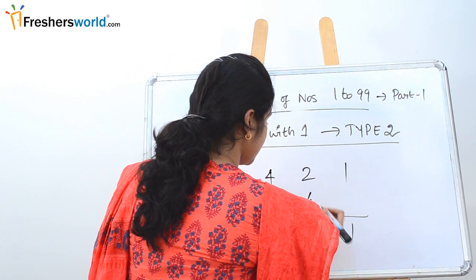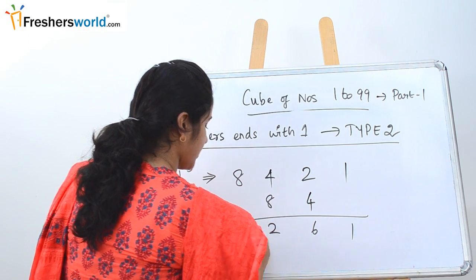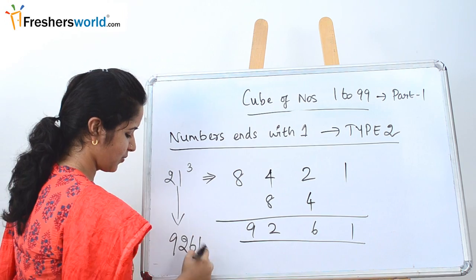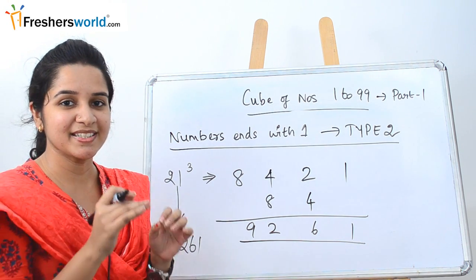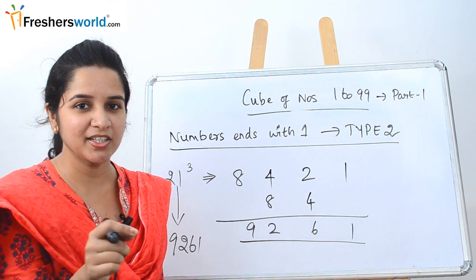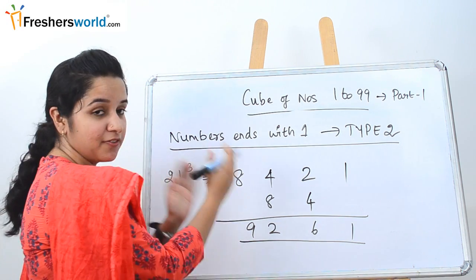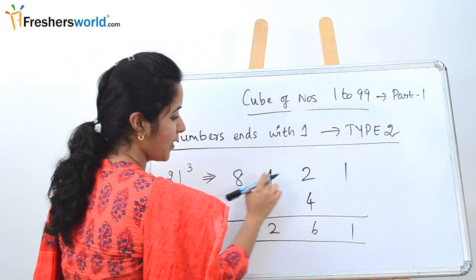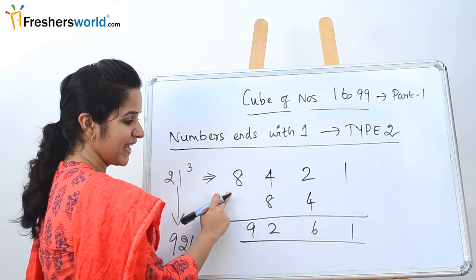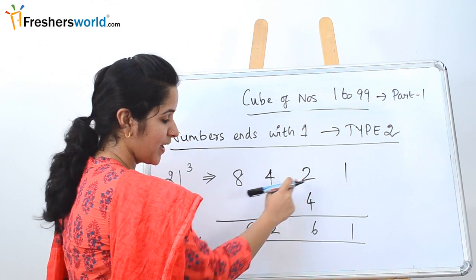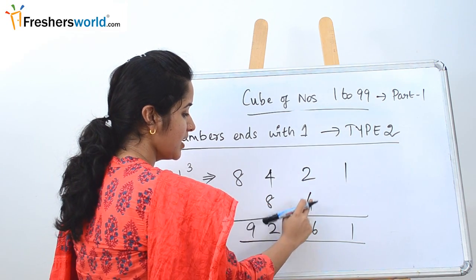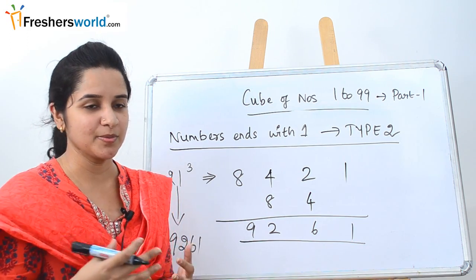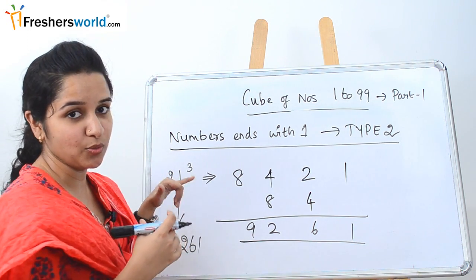1, 6, 9, 2, 6, 1. So 21 cube is 9261. How did we solve it? In the same way we did for type 1 with one minor change. Instead of putting the 21 in the first 2, we put it in the last 2. So 21 at the end, 2 square is 4, 2 cube is 8. Multiply the middle 2 digits by 2, which is 8 into 4. Then add it in the same way. Once you do this, you will get easily the cube for problems where the number ends with 1.